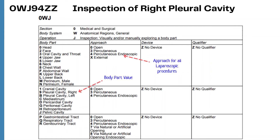The second code is for Inspection of the right pleural cavity: 0WJ94ZZ. Inspection is coded as the secondary procedure since the open lobectomy is the primary procedure. The section is Medical and Surgical, the body system is Anatomical Regions General — because the inspection was only of the pleural cavity, and all cavities are coded to Anatomical Regions General. The root operation is Inspection and the body part is Right Pleural Cavity.